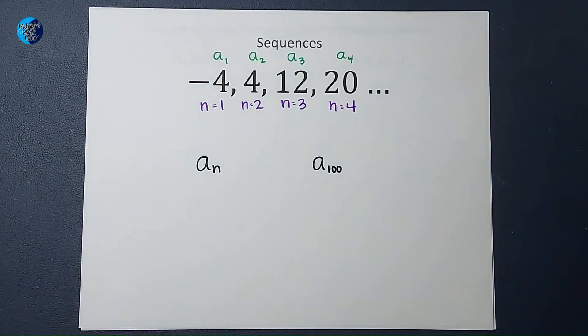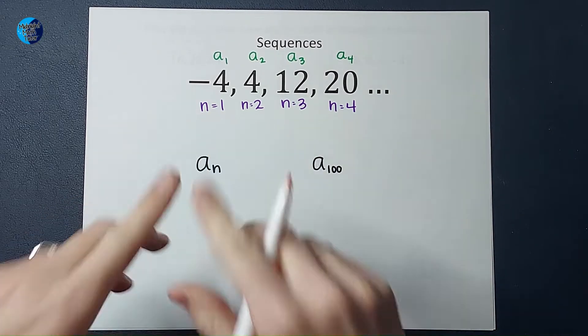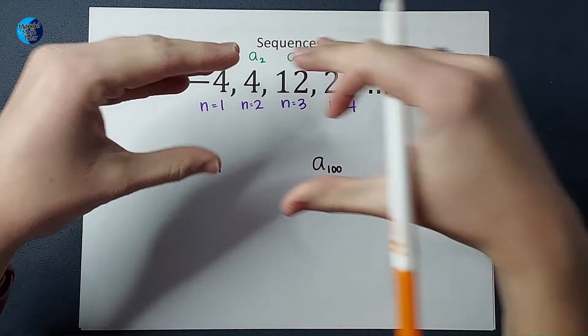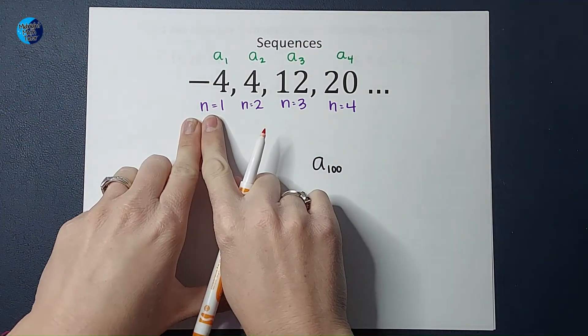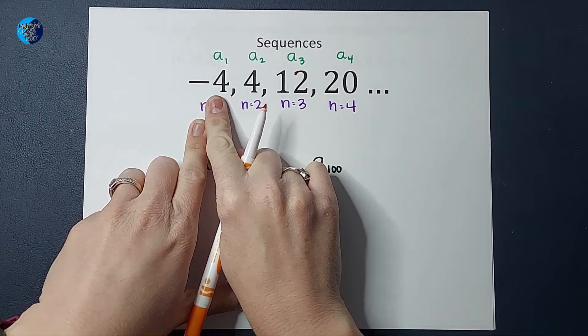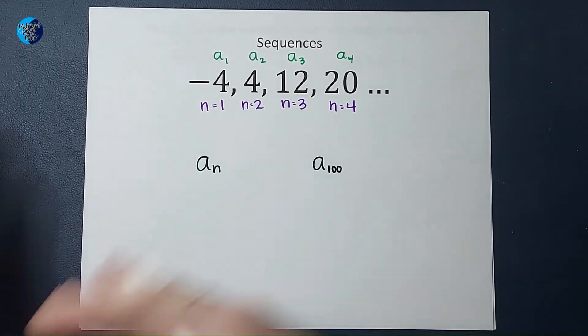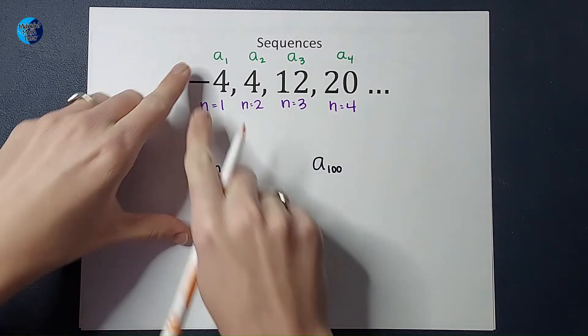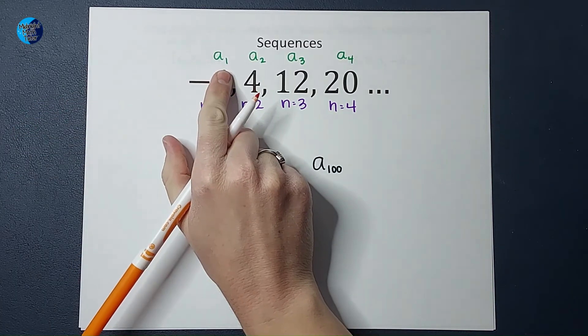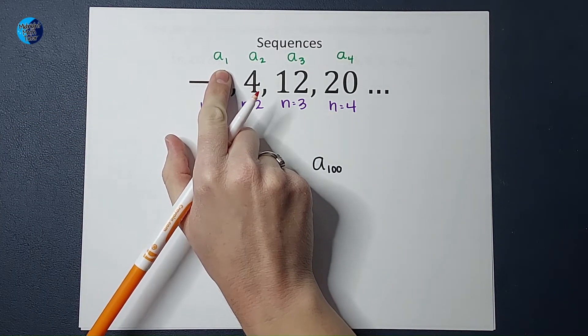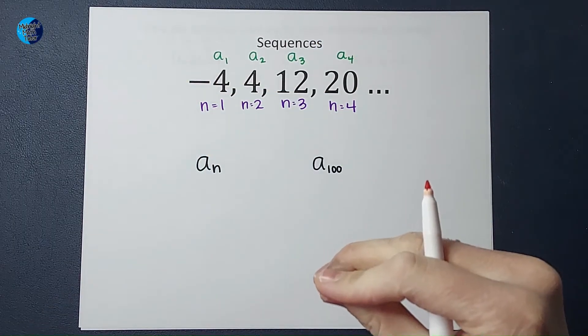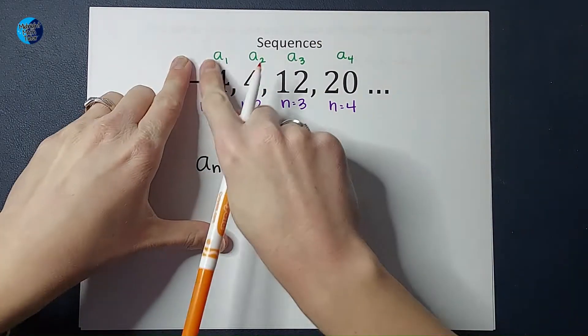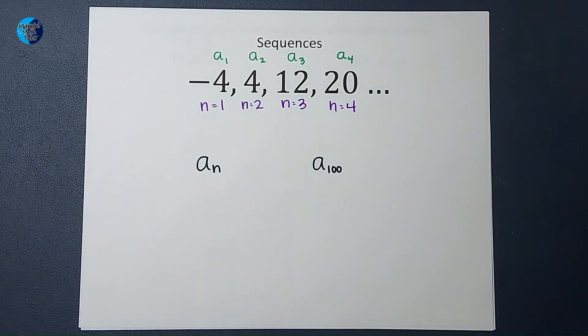So when you're working with these, you're going to see a lot of A's and a lot of N's. The N refers to the place it is in line, basically, the place in the sequence. So n=1 is the first number in the sequence, n=3 is the third number in the sequence, and on it goes. When you see A with a little number like this, a little subscript, A sub 1, that's talking about the value of that number. So A sub 1 in this case is negative 4.